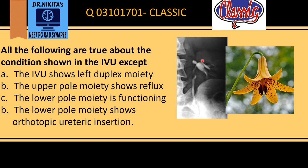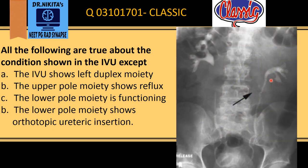Because of this pressure from the upper pole moiety, the lower pole moiety starts drooping. This drooping of the lower pole moiety gives rise to the sign called the drooping lily sign, which is seen in duplex moiety. On this IVP image, we see the lower pole moiety drooping down because of pressure from the upper pole moiety, which is not opacified.